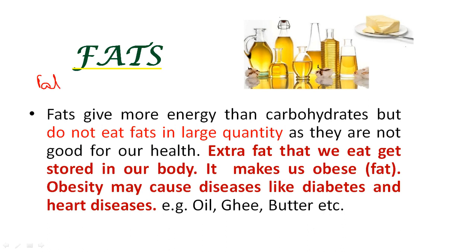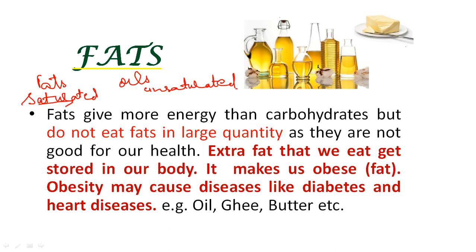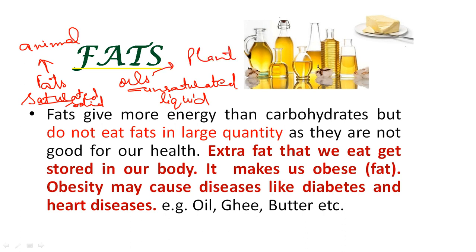Next we will discuss fats. Fats and oils are almost similar substances, but fats are saturated and oils are unsaturated. Fats are solid at room temperature, while oils are liquid at room temperature. Fats come from animal sources and oils come from plant sources. Milk, butter, cream, cheese, egg, and meat are foods rich in fats.